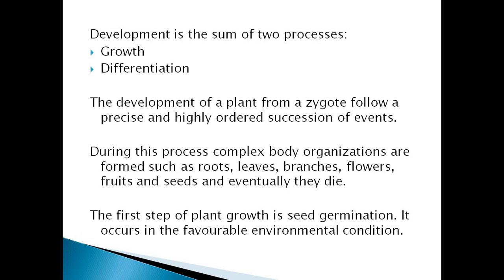During this process, body organization occurs. The zygote is a single-cell structure; it divides to form multi-cells, and this forms tissue, which then forms different organ systems — in animals and also in plants. These include roots, leaves, branches, flowers, fruits, and seeds. After this process, they all eventually die, as all living organisms are mortal.